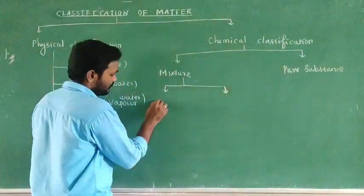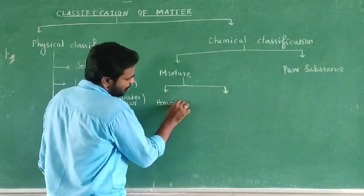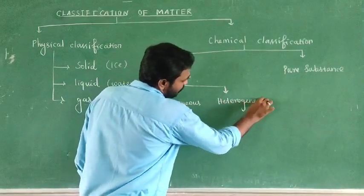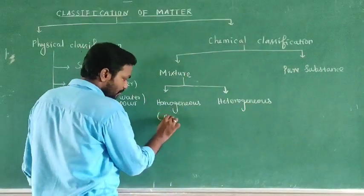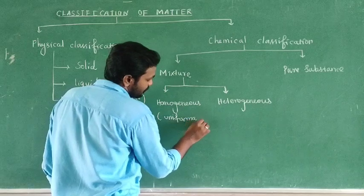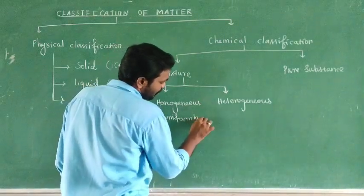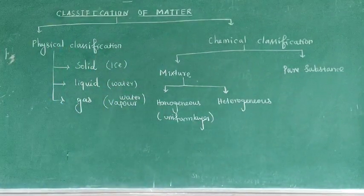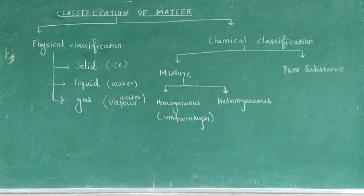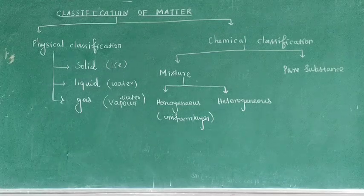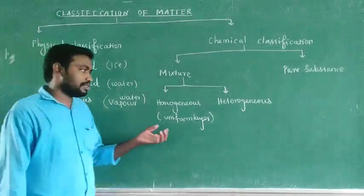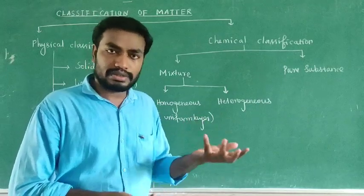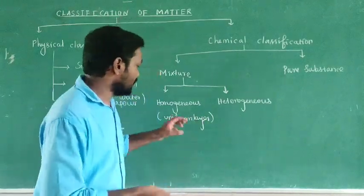First type of mixture: homogeneous. Homogeneous means uniform — the same throughout, evenly distributed, not visibly separated. For example, salt solution and sugar solution — where the sugar is dissolved uniformly. This is a homogeneous solution.